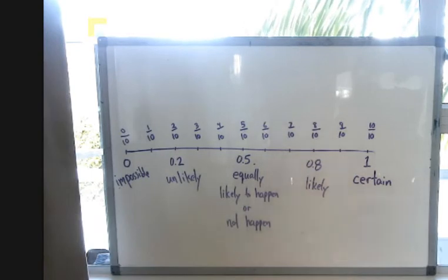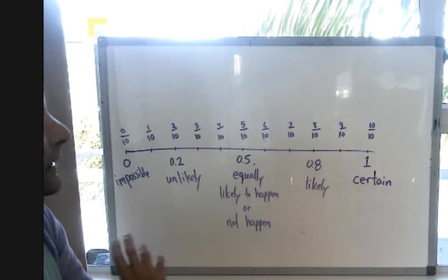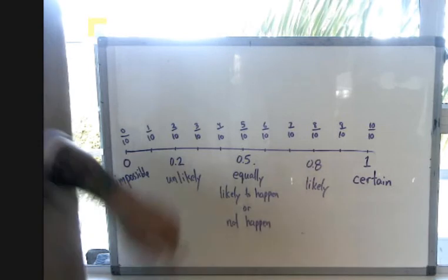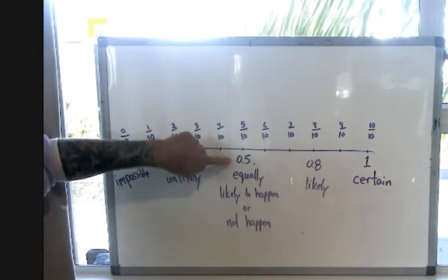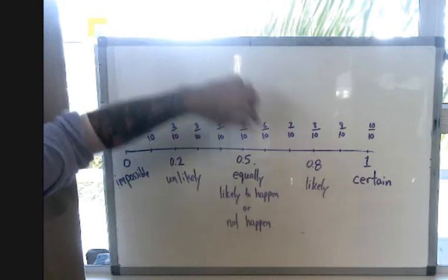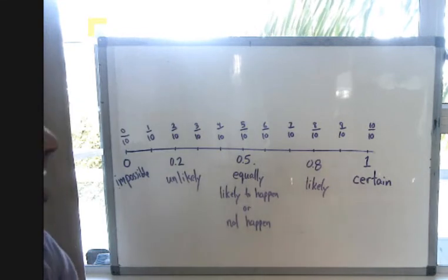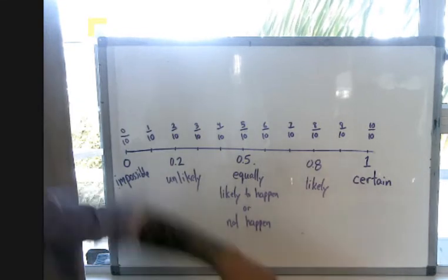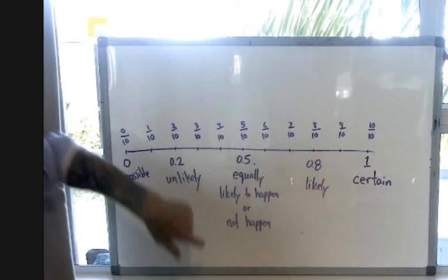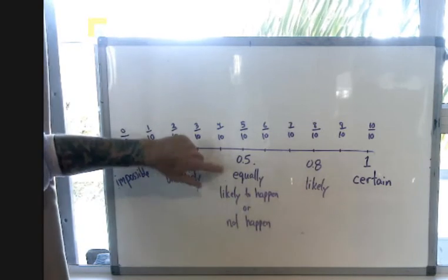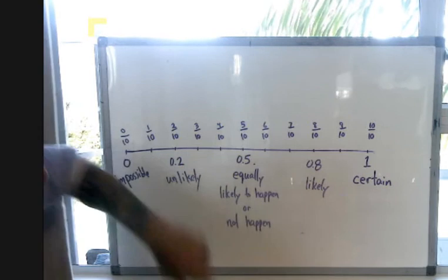Now a very special probability lies right in between zero and one. That probability of 0.5 or 5 over 10, like tossing a coin and getting heads. It's a probability of 0.5. And what that means is the event is equally likely to happen or not happen.